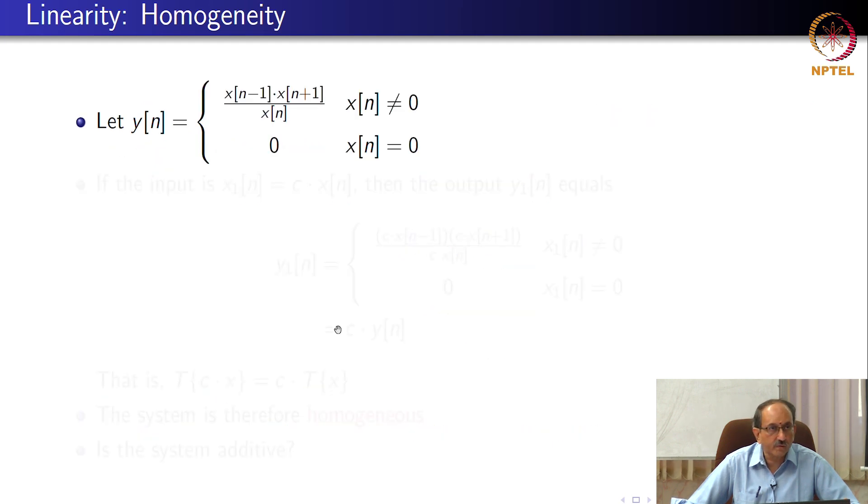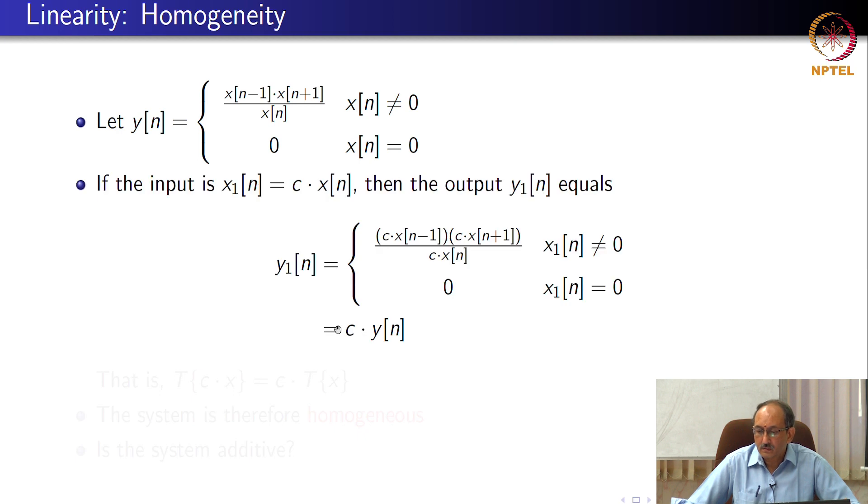Now, let us consider this particular system: y[n] equals x[n-1] times x[n+1] divided by x[n] whenever the denominator is not 0, and 0 otherwise, alright. Now, if you take an input x1 which is c times x[n], you see that y1[n], when the input is x1[n], x1[n] in turn is c times x[n], y1[n] turns out to be c times y[n], correct? So, pretty simple, the c's cancel and you get c times y[n].